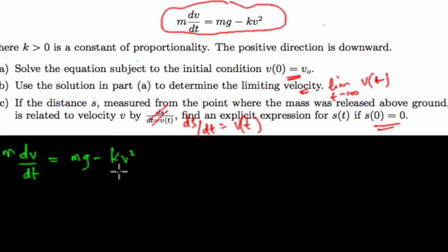What we have is, we have m dv dt equals mg minus kv squared. Now I want to solve this differential equation. To even think of solving this differential equation, there are some things we need to note.